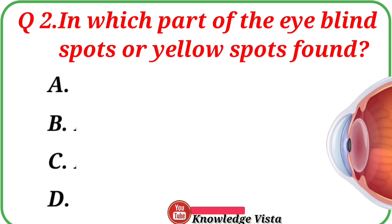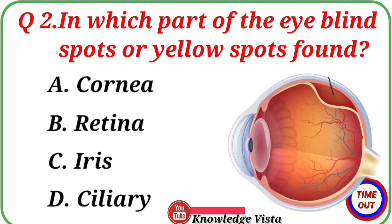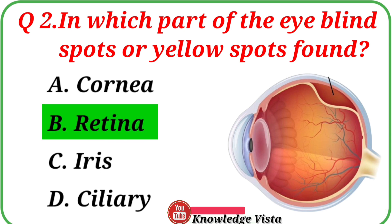Question No. 2: In which part of the eye are blind spots or yellow spots found? Your options are: A. Cornea, B. Retina, C. Iris, D. Ciliary. Correct answer is Option B, Retina.